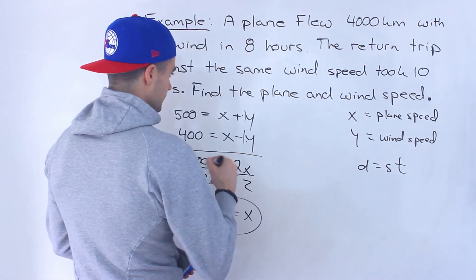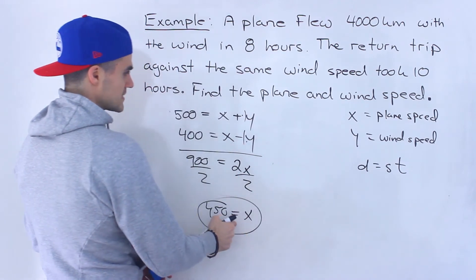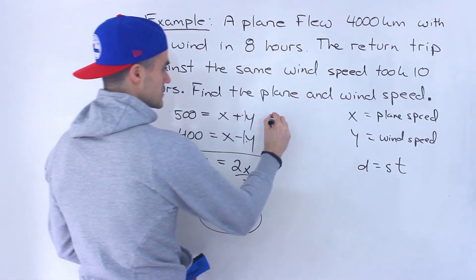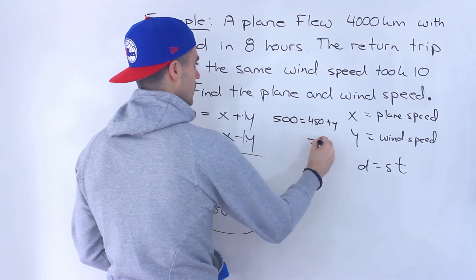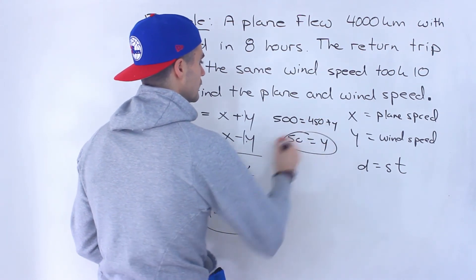And then we could plug it in. We could plug in this X value to either or. Let's plug it into this one. So we'll have 500 equals 450 plus Y. Y would be 50.